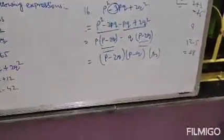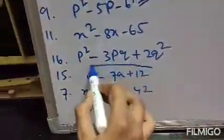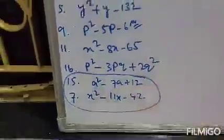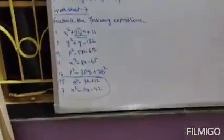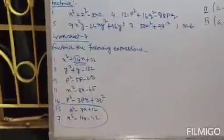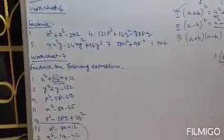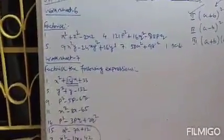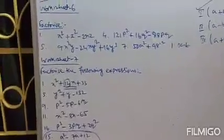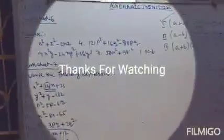This is the way we solve middle term factorization questions. The chapter is now complete. Try to solve the remaining questions — numbers 15 and 7 — in your homework copy. I will check them as soon as possible after the lockdown. Thank you.